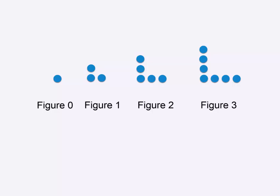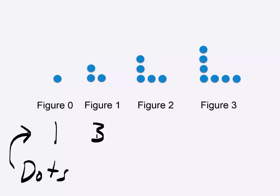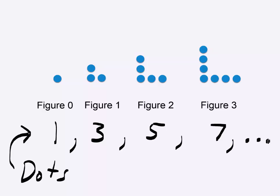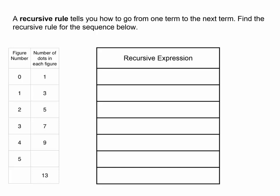We notice that every time the next figure gets taller and longer by one dot. Let's count the total number of dots in each figure. These numbers form what is called a sequence.